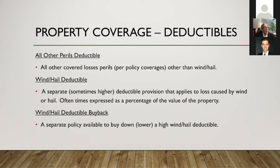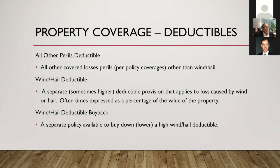We can buy that wind and hail deductible back. The cost depends on the quality of the building and its exposure. For big buildings we can sometimes get 6% of the deductible as the premium; the average is 8%. So if you have a $150,000 deductible and buy it down to $25,000, the difference is $125,000, and they'll charge about $16,000 — that's 8% of the deductible amount.